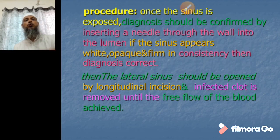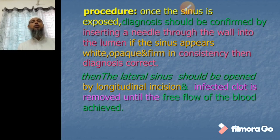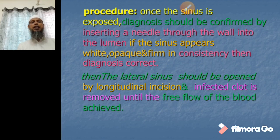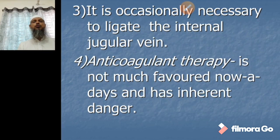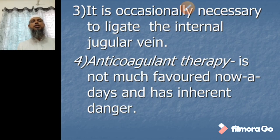For those aiming for honors: once the sinus is exposed, diagnosis should be confirmed by inserting a needle through the wall into the lumen. If the sinus appears white, opaque, and of firm consistency, the diagnosis is correct. The lateral sinus is then opened by longitudinal incision and the infected clot is removed until free flow of blood is achieved. It is occasionally necessary to ligate the internal jugular vein. Anticoagulant therapy is not much favored nowadays because of its inherent dangers.